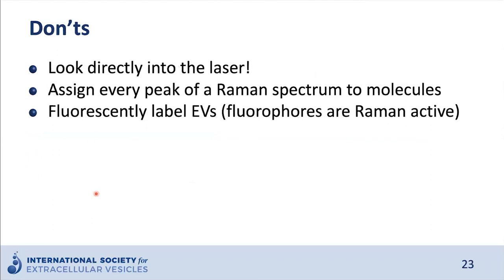Some dos: definitely consider the substrate — we normally prefer quartz over glass due to its low intrinsic autofluorescence at typical wavelengths. We always keep the laser power and integration time fixed across samples to ensure accurate comparison. We perform and report daily wavelength and intensity calibrations using material reference standards and lamp standards. We use dilution series to optimize EV concentration, especially for single trapping, to avoid multiple EVs trapped at the same time when you think you're getting just one. Some don'ts: don't look directly into the laser and consider proper laser safety. We recommend to avoid overfitting of data — trying to fit every little peak to a defined molecule without proper calibration — and always consider that fluorescent labels can confound Raman measurements, as these molecules also show up in spectra.